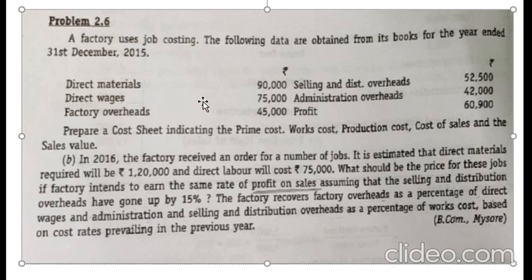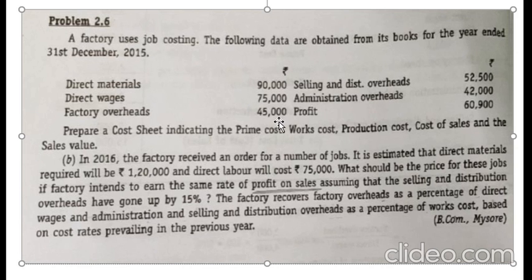Hello everyone. In this video we will be discussing Problem 2.6. The question is: a factory uses job costing. The following data are obtained from its books for the year ended 31st December 2015: direct materials 90,000, direct wages 75,000, factory overhead 45,000, selling and distribution overhead 52,500, administration overhead 42,000, and profit 60,900. Prepare a cost sheet indicating the prime cost, works cost, production cost, cost of sales, and the sales value.